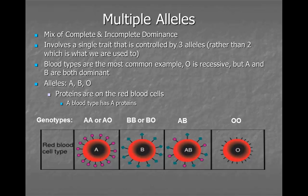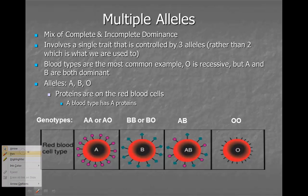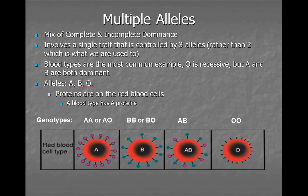These four phenotypes are all determined by three alleles. Those alleles are A, B, and O. Notice they are all capital letters. When you think about a red blood cell, as you see on the figure below here, you'll see there are various proteins on that red blood cell that identify that blood cell as type A, type B, type AB, or type O.